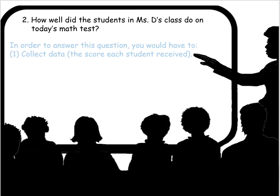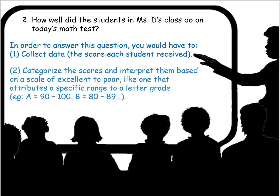How well did the students in Ms. D's class do on today's math test? In order to answer this question, you would have to collect data — the score for each student. You would then categorize the scores and interpret them based on a scale of excellent to poor, like a letter grade scale where an A is 90 to 100, a B is 80 to 89, and so on. This is a statistical question.